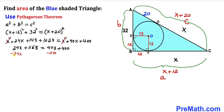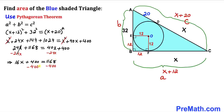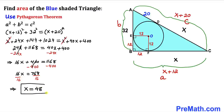Now let's subtract 24X from both sides: 1168 = 16X + 400. Subtracting 400 from both sides gives us 16X = 768. Dividing both sides by 16, our X value turns out to be 48 units.